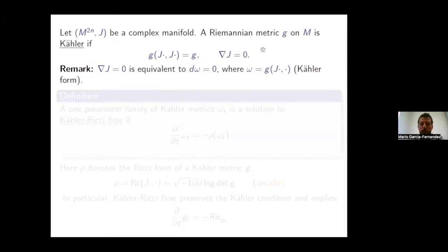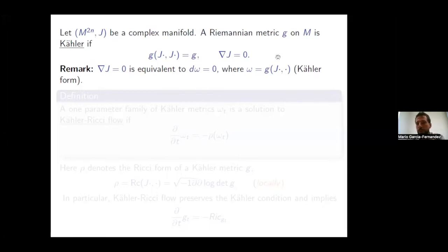There is a classical calculation which tells you that having ∇J = 0 is equivalent to the Hermitian form ω — the Kähler form — being d-closed. I'm assuming the almost complex structure is integrable, so I don't see the Nijenhuis tensor. Otherwise, if I started with an almost structure, I would also see the vanishing of the Nijenhuis tensor.